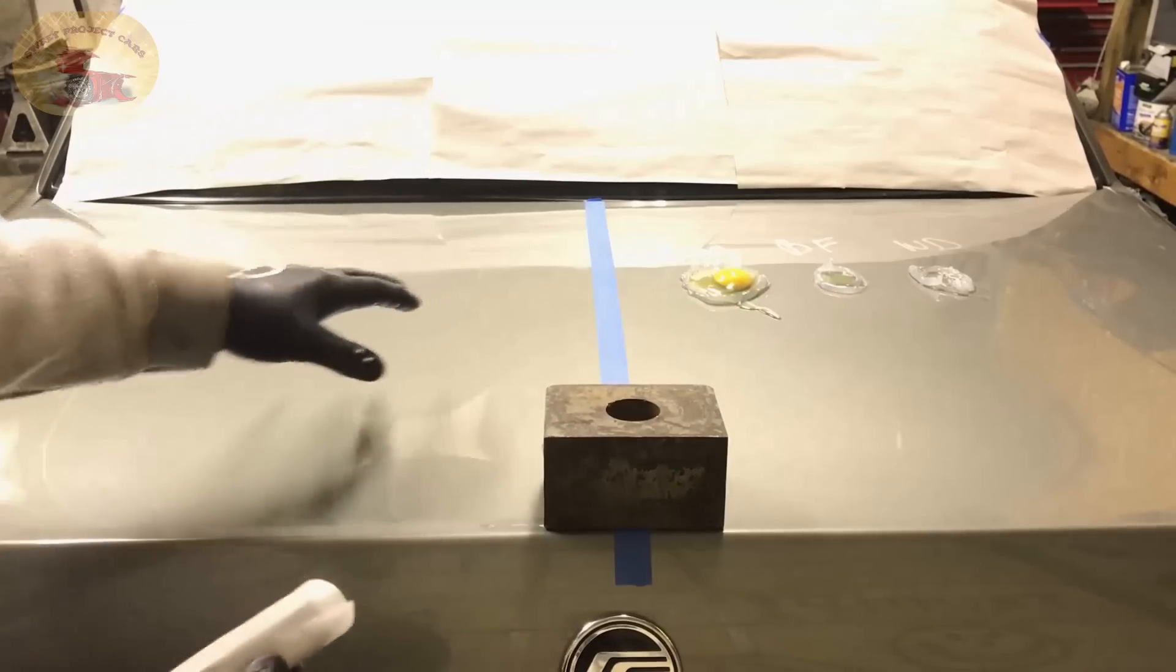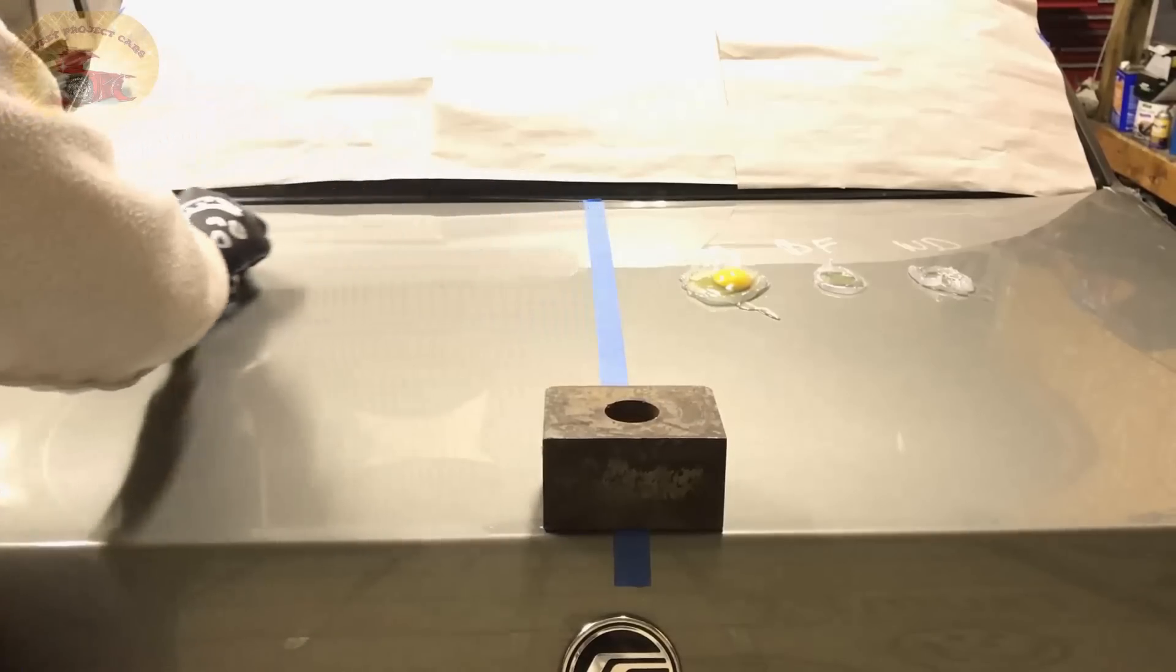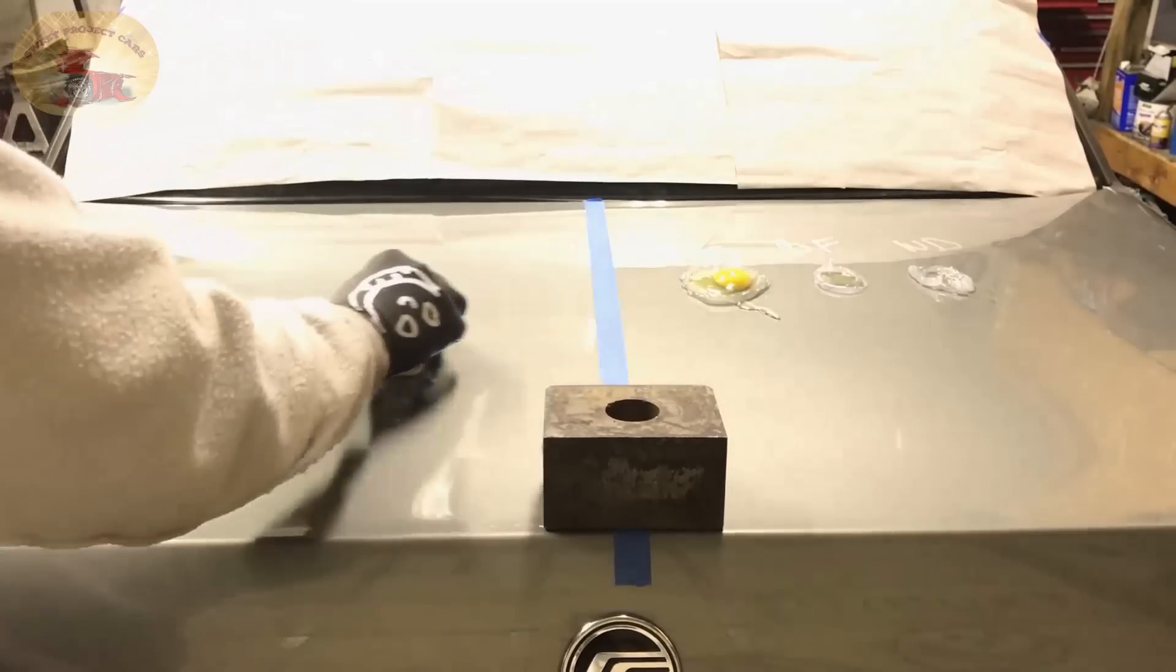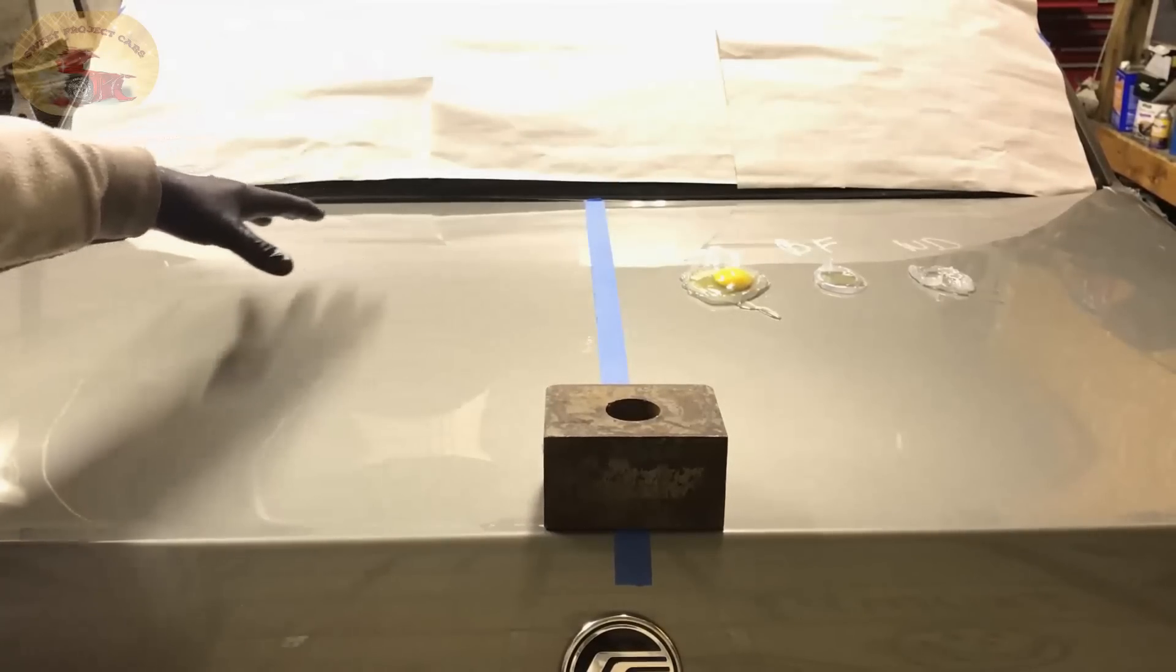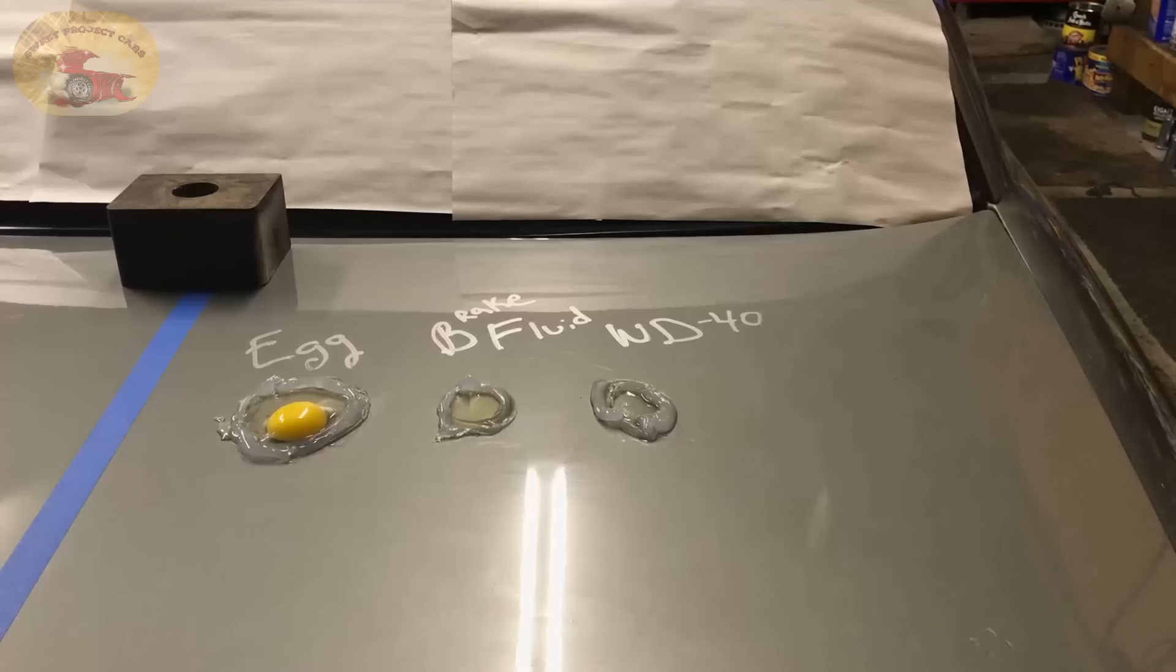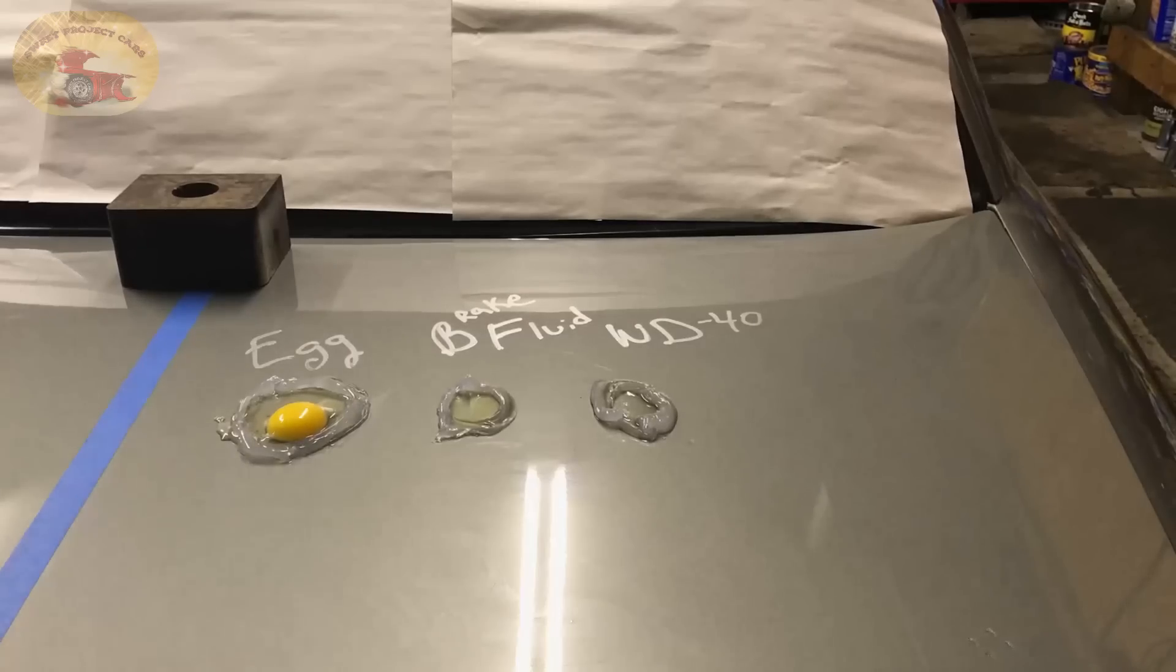We'll let that dry up and then buff it out, and then we'll do the same thing we did on the other side. Okay, we've got to let that dry for about 15-20 minutes and then we'll buff it out. All right, we've got it all on, we've ceramic coated that side of the tape. That'll have to set for 24 hours or so.